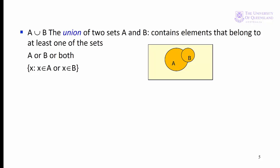We define the union of two sets with a symbol that looks like a U. An element of A union B belongs to A or B or both. It's represented by the orange area in the Venn diagram. Formally, it's the set of x such that x is a member of A or x is a member of B.